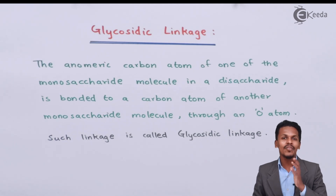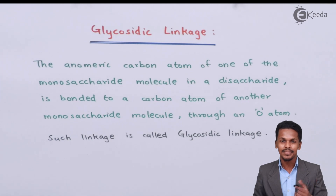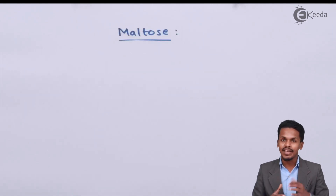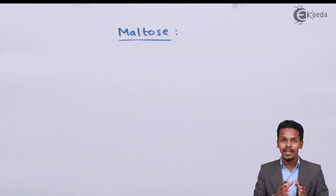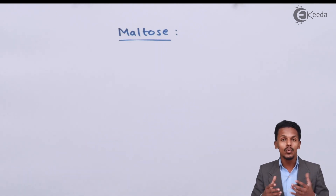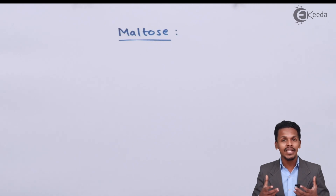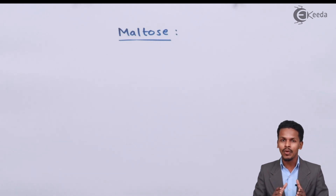Let me give you an example so we can understand this term easily. Maltose is a disaccharide, meaning when it undergoes hydrolysis it forms two monosaccharides. Those monosaccharides are alpha-D-glucopyranose. So we have two alpha-D-glucopyranose units, and whenever these two combine with each other they form maltose. Let's now talk about the structure of maltose.